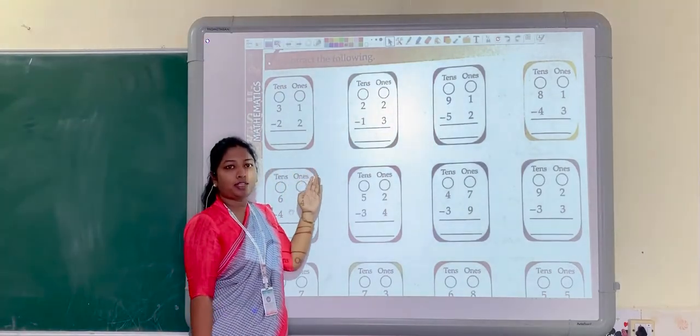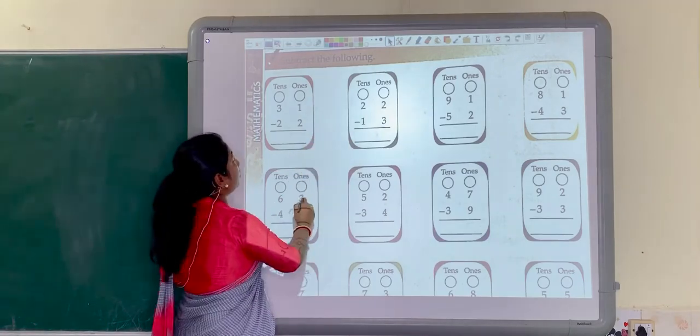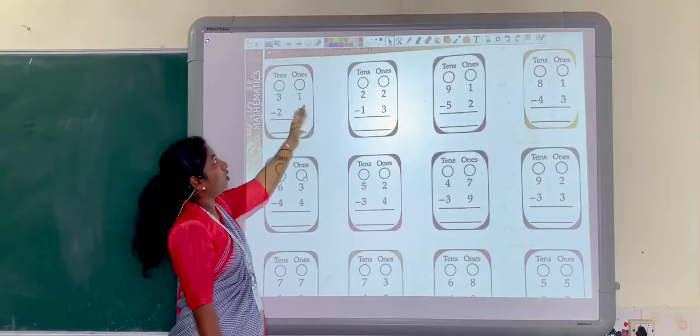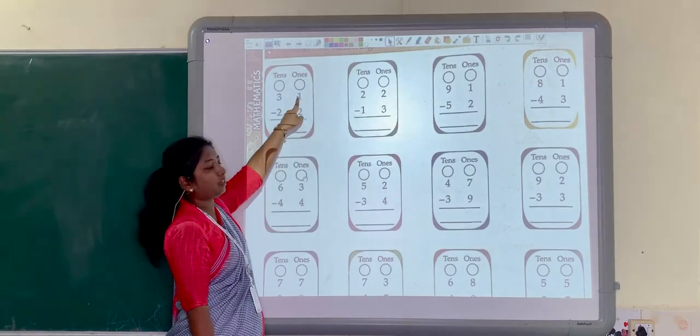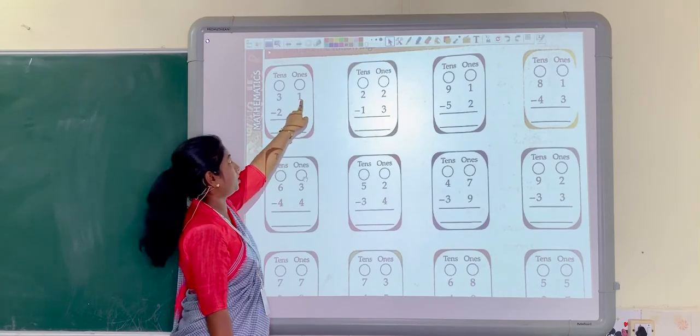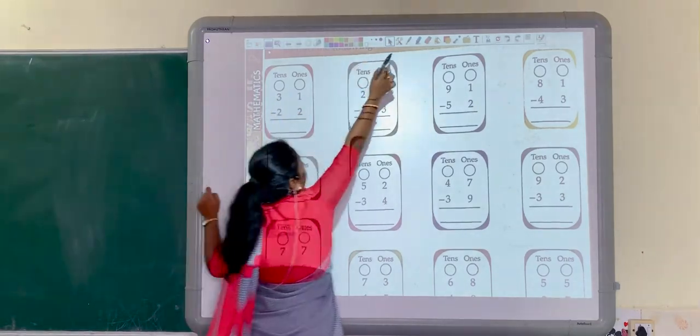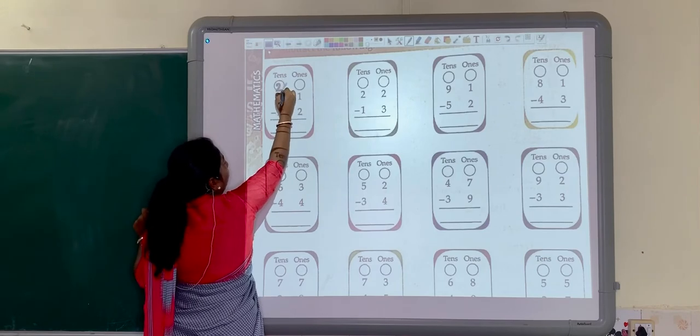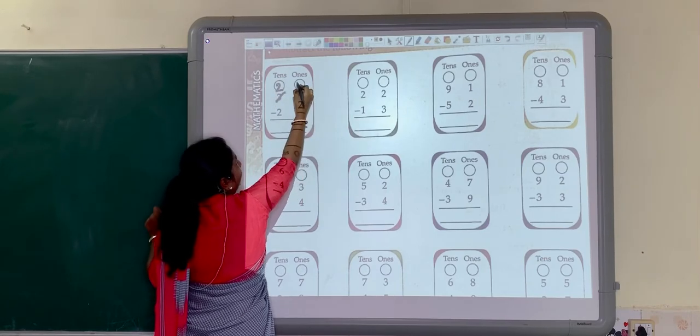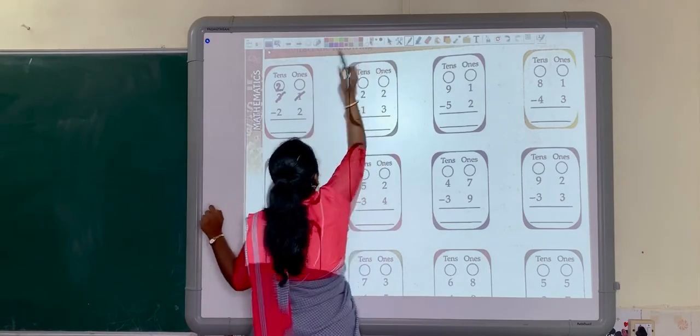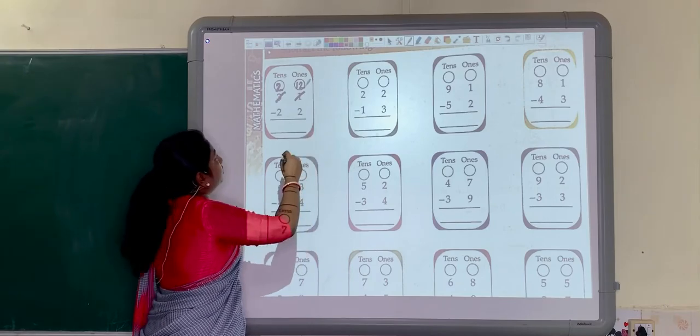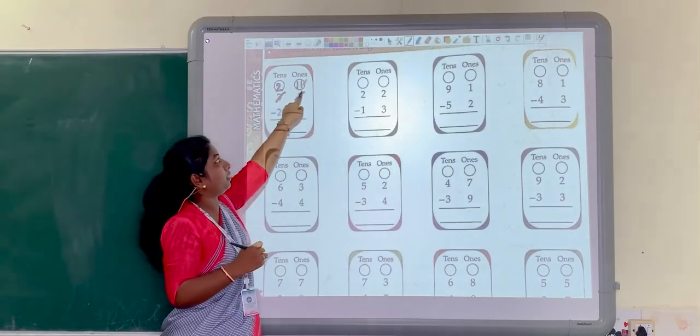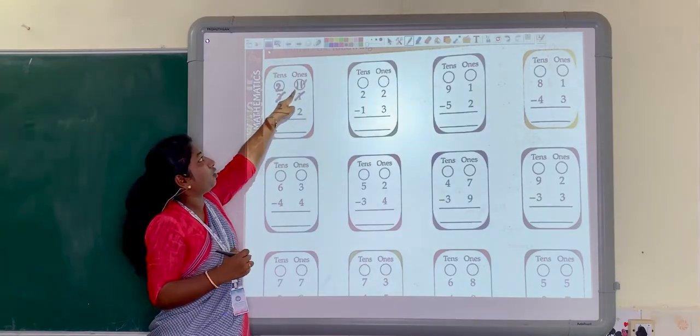Now, we studied how to solve that. We are going to solve some of the sums here. See here. First one. What is this? 31 minus 22. On 1's part, 1 minus 2. Can we subtract 2 from 1? No. It is not possible. So, we have to borrow from the next number. What is the number? 3. And here, we have to put 2. And here, it will cut and it will become 11. Why 11? Because we have taken 1 from here and this 1 is there. So, 11 minus 2.